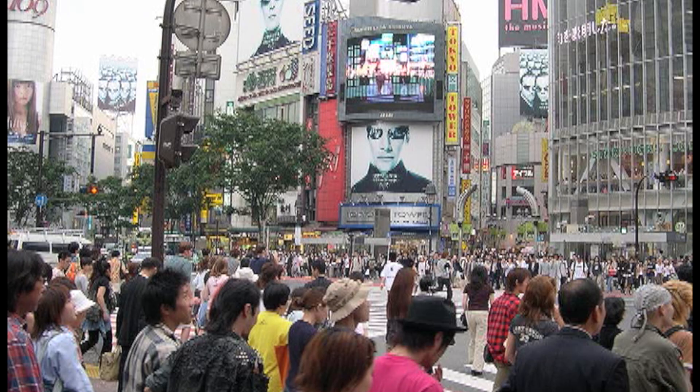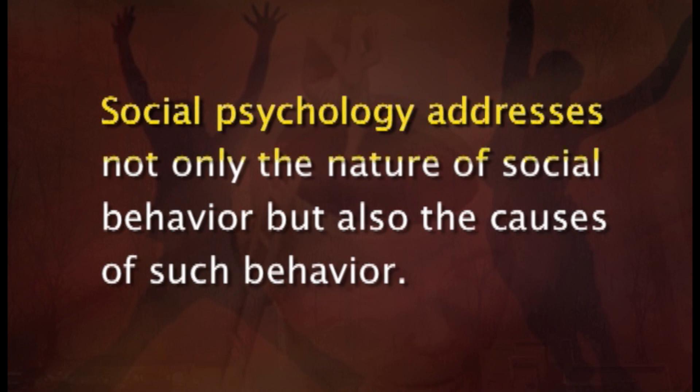Is social psychology a science, and what is its relation to other fields of psychology? Social psychology can be defined as the systematic study of the nature and causes of human social behavior. The first feature of this definition states that the main focus of social psychology is human social behavior, which includes the activities of individuals in the presence of others and the processes of social interaction between two or more persons.